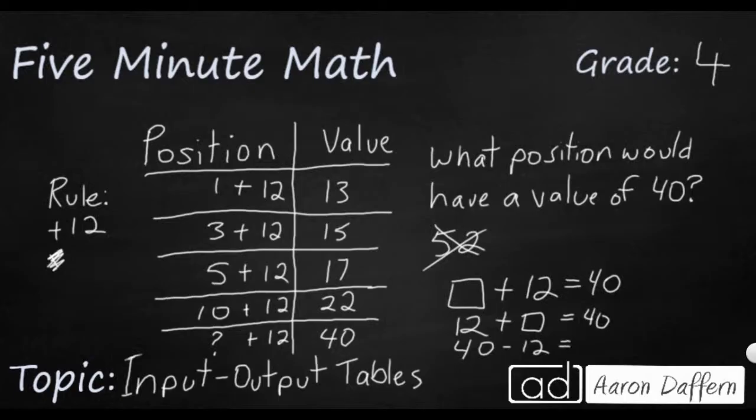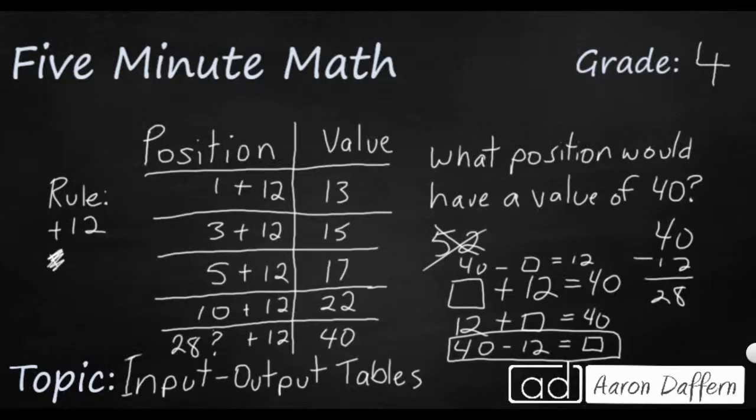We can either look at 40 minus 12 equals our unknown number, or if I want to put it up here, I can say 40 minus the unknown number equals 12. And it's really going to be this one that's going to help me. 40 minus 12, and that's going to get me 28. So 28 is going to go right here in this position is the answer to this problem because 28 plus 12 makes 40.